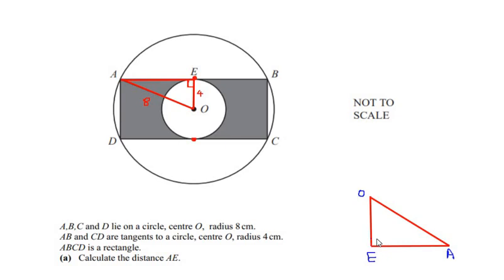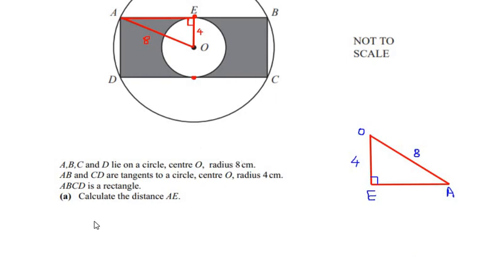OE is perpendicular to EA. OE is given as 4 centimeters, being the radius of the inner circle, and OA is the radius of the outer circle, given as 8 centimeters. We use the Pythagorean theorem: OA squared equals OE squared plus AE squared.